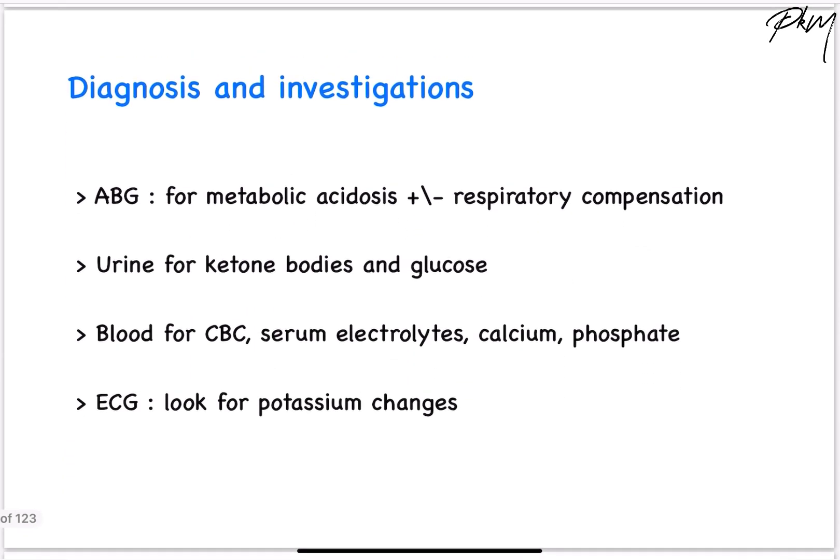Next we come to diagnosis and investigations. The main investigation for diagnosis is detection of ketone bodies in urine, ABG detecting metabolic acidosis, and Kussmaul breathing. Other investigations include ECG for detecting hypokalemia or hyperkalemia, blood electrolytes, and CBC.